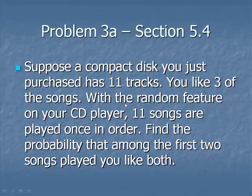Suppose a compact disc you just purchased has 11 tracks. You like three of the songs. With the random feature on your CD player, 11 songs are played once in order. Find the probability that the first two songs played, you like both of them. There's a summary of our totals, three that you like, eight you dislike, for a total of 11.